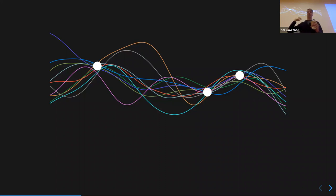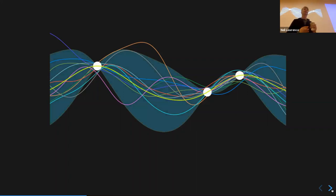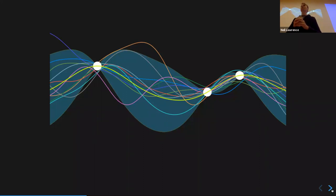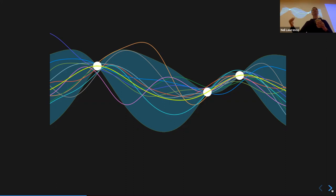The beautiful thing with the Gaussian process is that it's analytic. But most of the time you can't do this analytically - that's the real problem we face. The things you might want to express about your belief about how the world operates are difficult to express analytically in mathematics. There are only a few bits of maths that actually work - linear algebra is one of them.